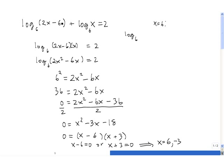So 2x minus 6. If we plug in 6, we get 2 times 6, which is 12, minus 6, which is 6. So we get log base 6 of 6 plus log base 6 of 6. And the question is, does that equal 2? This 2 right there.